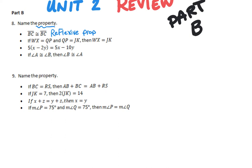Up next: if WX equals QP and QP equals JK, then WX must equal JK. That one goes from the first thing all the way to the last thing with a middleman connecting them — it transfers the equality around, and we call that the transitive property. It's like saying if I'm the same height as David and David is the same height as Juliet, then I must be the same height as Juliet.